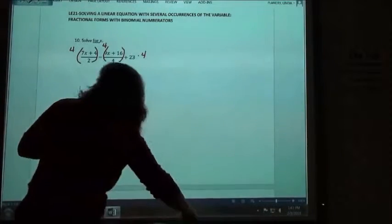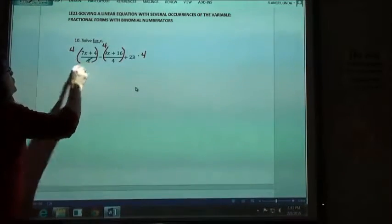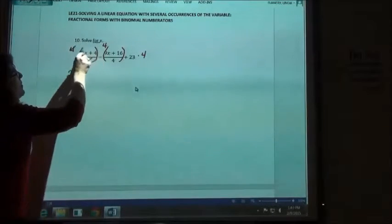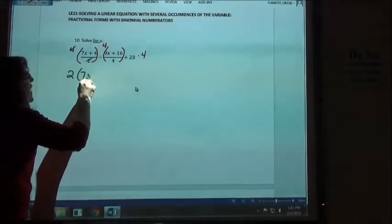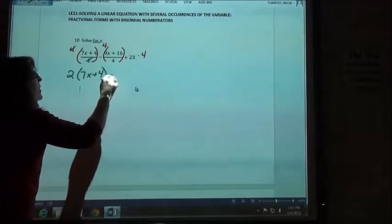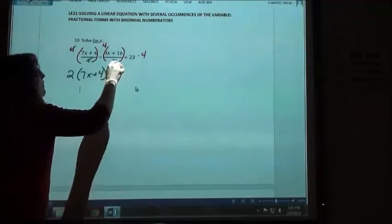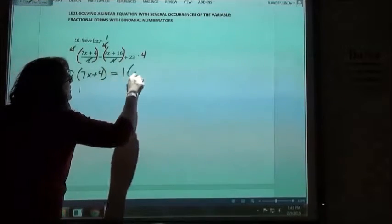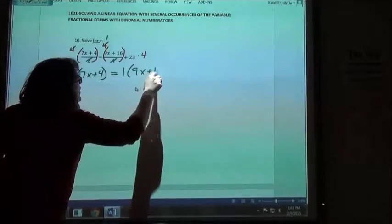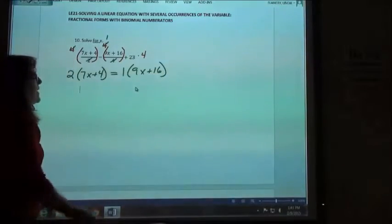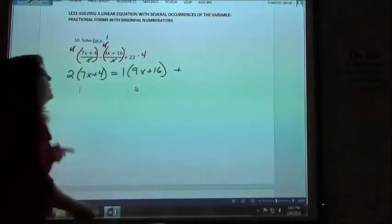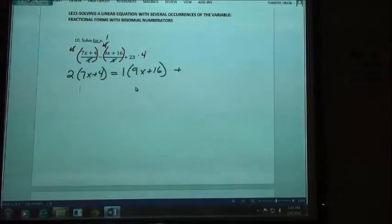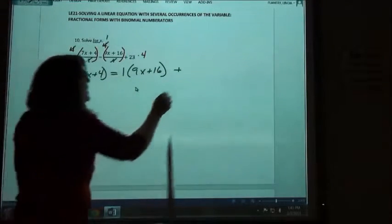What I'm going to do is I'm going to cancel. 2 goes into 4, 2 times, and I'm going to multiply it by the top of that fraction, the 7x plus 4. Equals, here, 4 goes into 4 one time. So technically I'm taking 1 times the top of that fraction, 9x plus 16. Plus, on the end, I have to take the 23 times the 4, since there's not a fraction, I can't do any canceling. And I'm going to get 92 there.